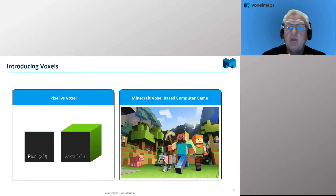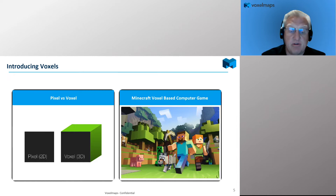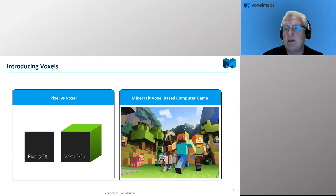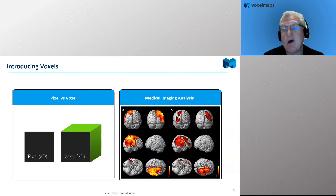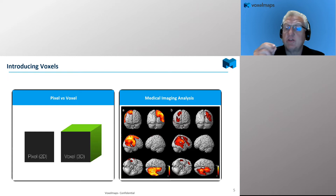At VoxelMaps we have a unique approach. Everyone is familiar with pixels — imagery and raster data — but a voxel is a 3D pixel. We utilize a voxel model, which is essentially a cube, and we create a model of the entire planet as a digital twin made of really small voxels. Think of it as a Minecraft version of the planet. Voxels are also heavily used in the medical community to map brain matter down to minute individual detail. It's widely used across a number of industries.